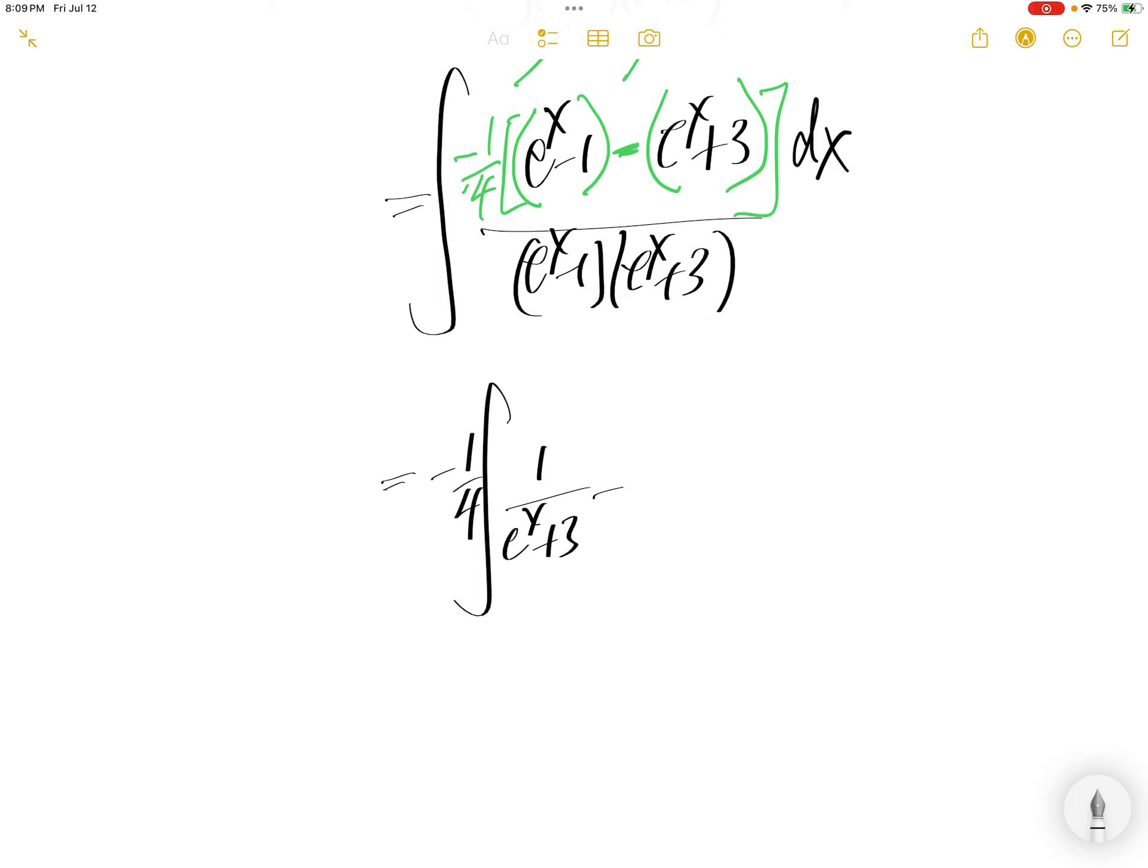Minus e to the power x plus 3 divided by e to the power x minus 1 times e to the power x plus 3. e to the power x plus 3 cancel, you get 1 over e to the power x minus 1 dx.